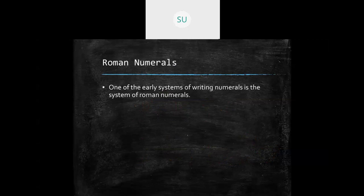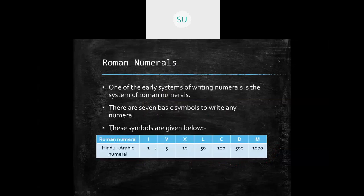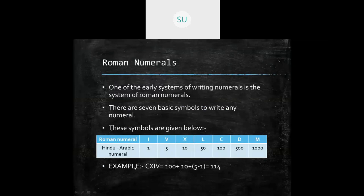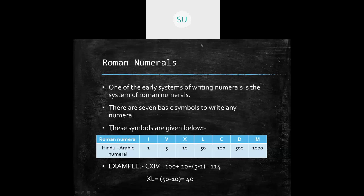We also studied Roman numerals, one of the early systems of writing numerals. There are seven basic symbols: I for 1, V for 5, X for 10, L for 50, C for 100, D for 500, and M for 1000. For example, CXIV: C is 100, X is 10, so 100 + 10 = 110; then I before V means 5 − 1 = 4, giving 114. For XL: X is smaller than L, so 50 − 10 = 40.